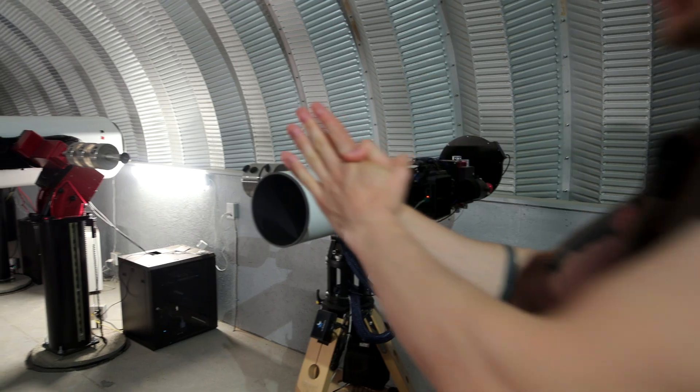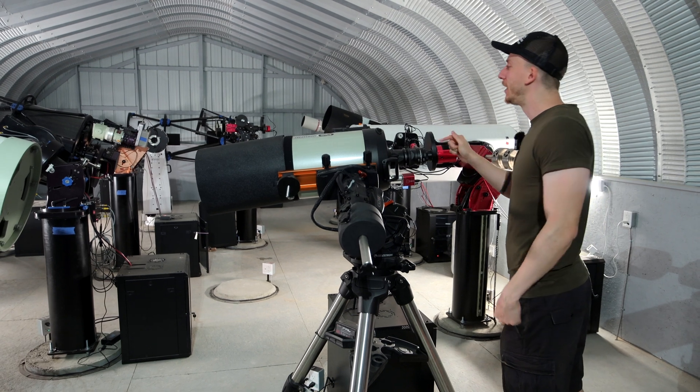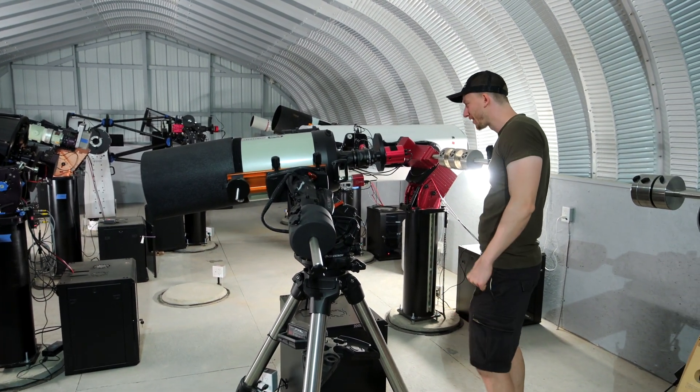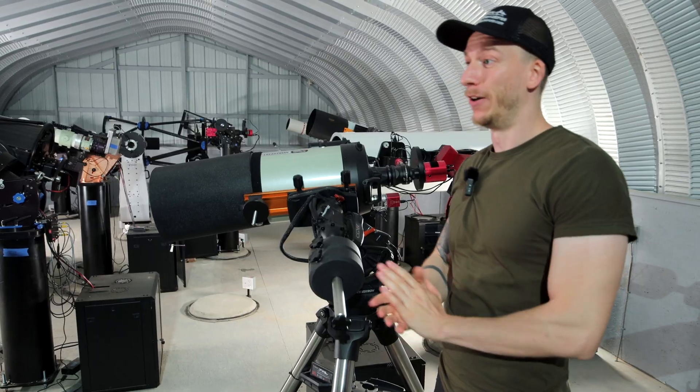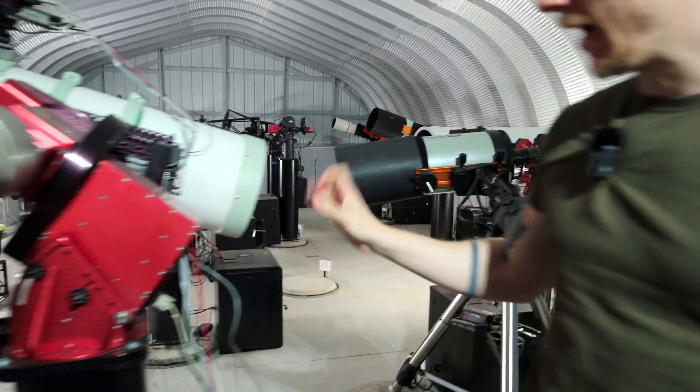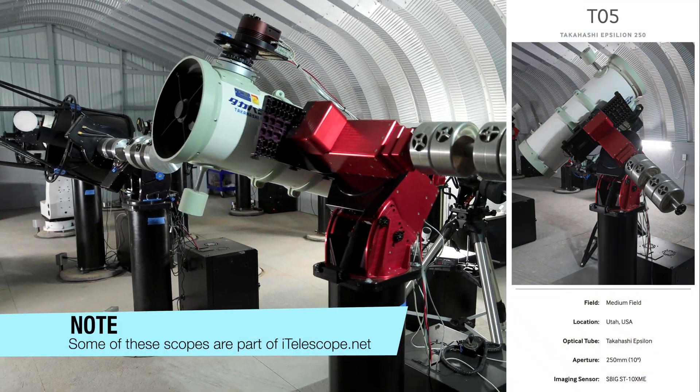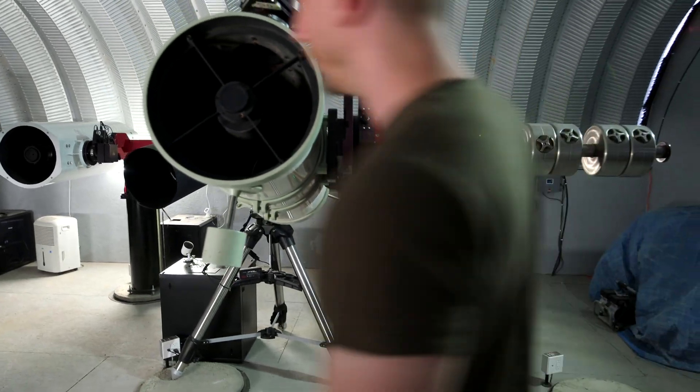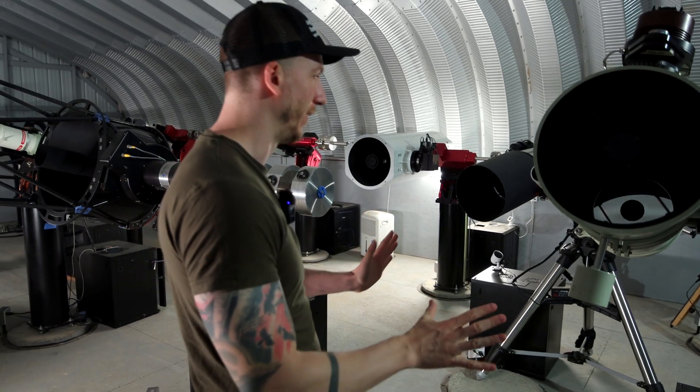Then we have a CGX mount over here with I believe a C11 HD which looks really nice with a monochrome camera here. Now on the left we have a big boy here. This is a Paramount, I believe it's MX maybe, not sure, but it's a big Paramount mount with a big Takahashi Newtonian telescope which looks amazing.